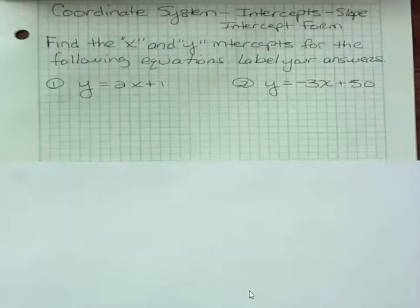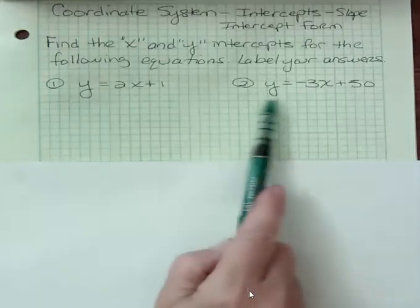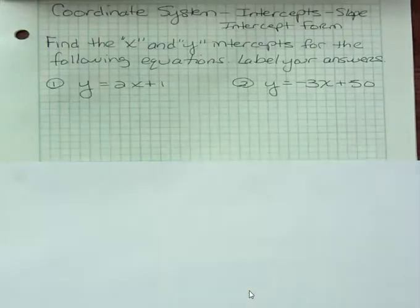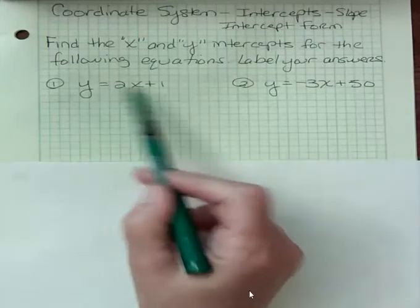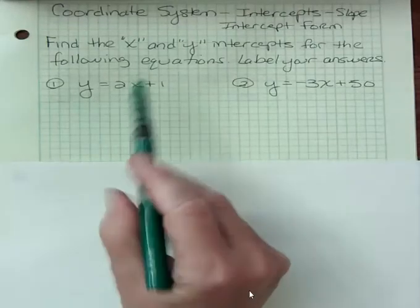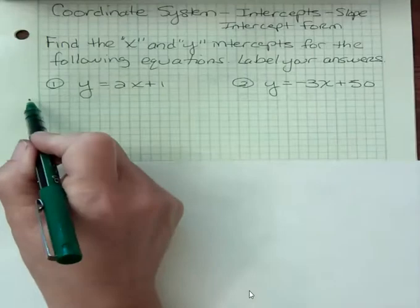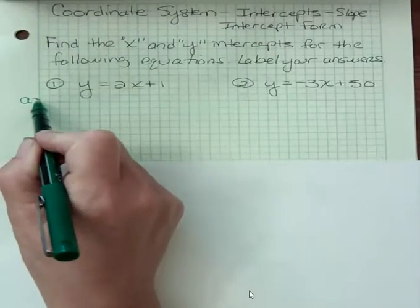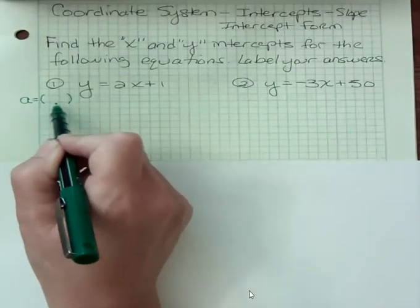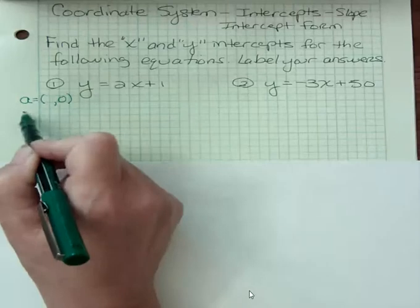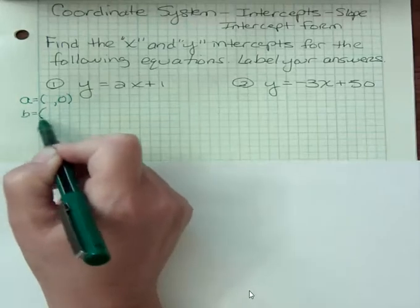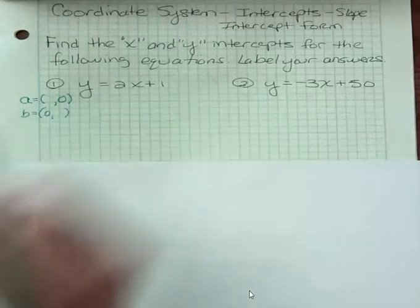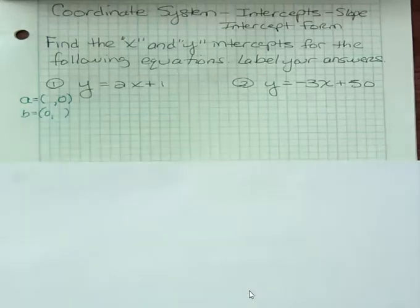Slope-intercept form is when you have y by itself like this. We're going to find the x and y-intercepts similar to what we just did but these look a little different and the math feels different when you're doing it but the idea is the same. You want to find your x-intercept when y is 0 and your y-intercept when x is 0. So we're doing the same thing but our equations look a little different.